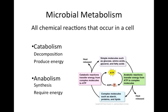Continuing clockwise on the diagram from the purple box back down to the blue box, we see that glucose, amino acids, glycerol, and fatty acids are combined to make up starch, proteins, and lipids in anabolic reactions. Because anabolism is an energy-requiring process, ATP is broken down into ADP and inorganic phosphate as anabolic reactions occur.